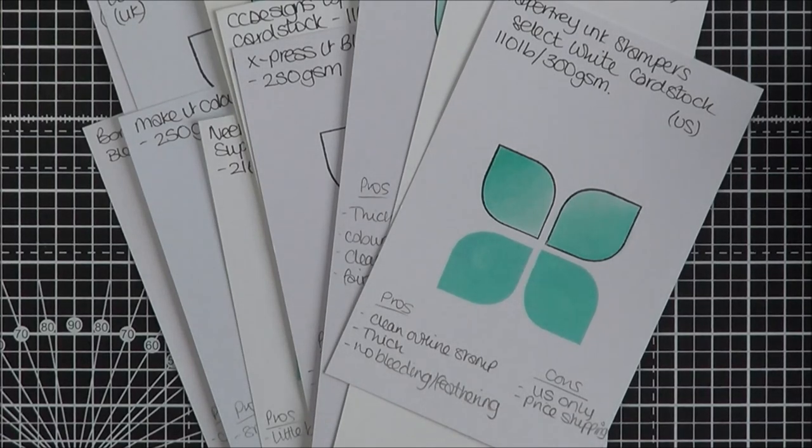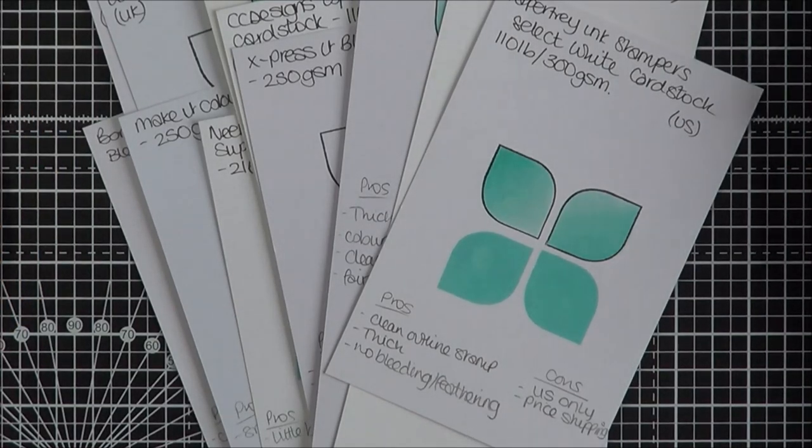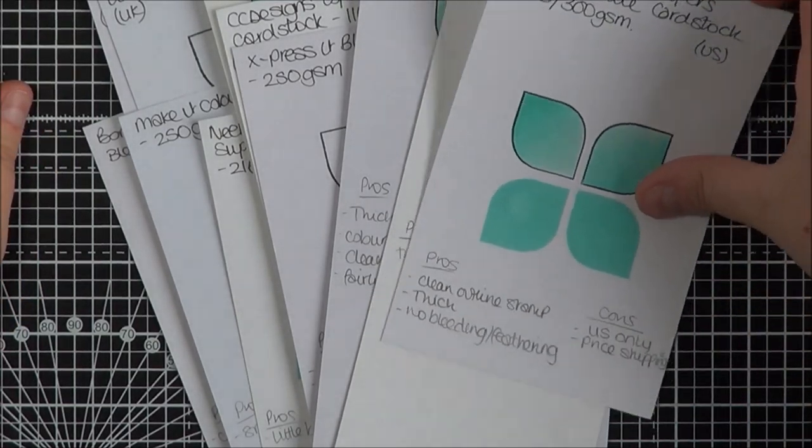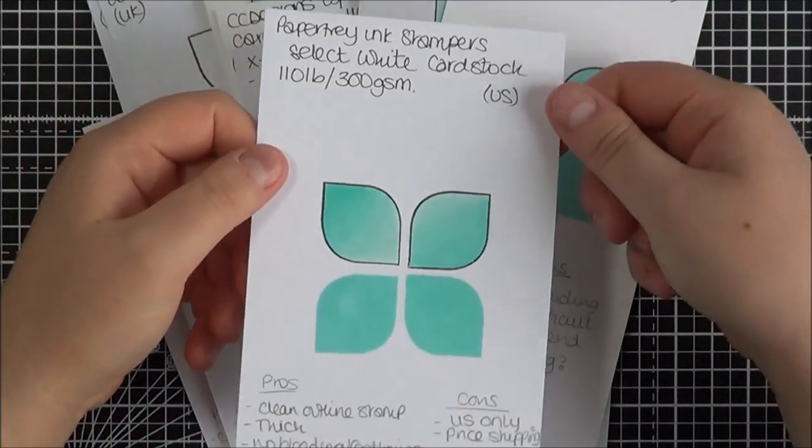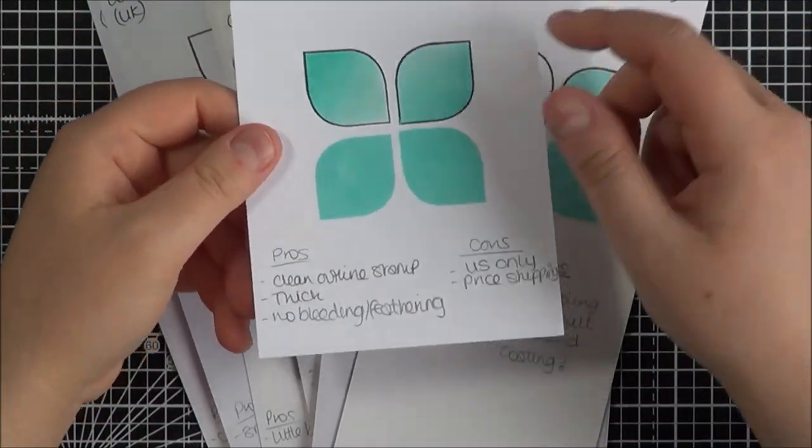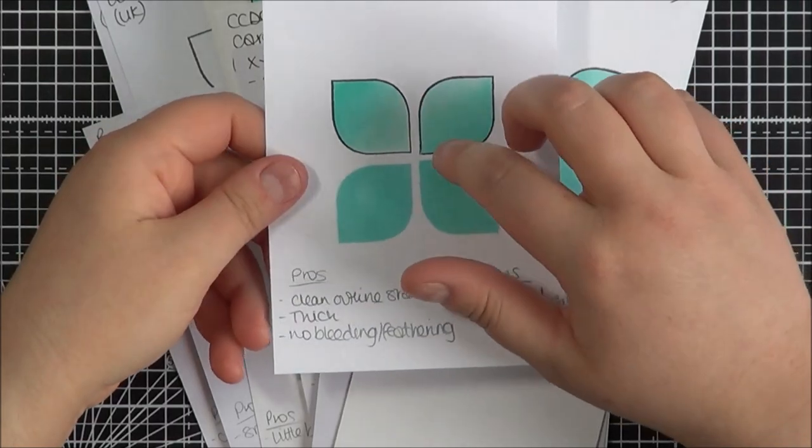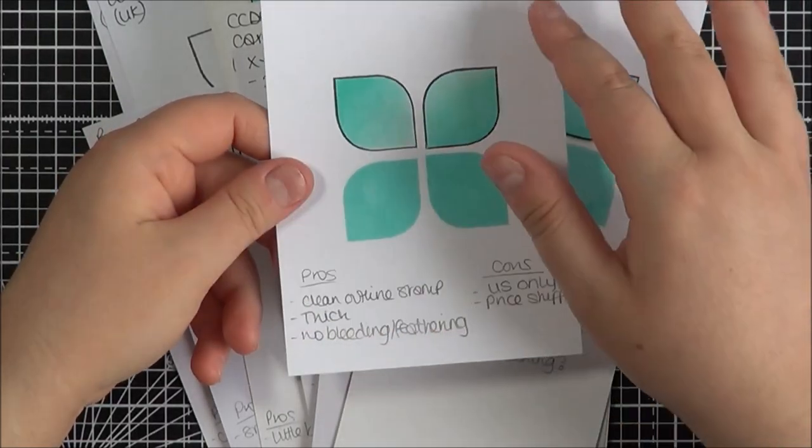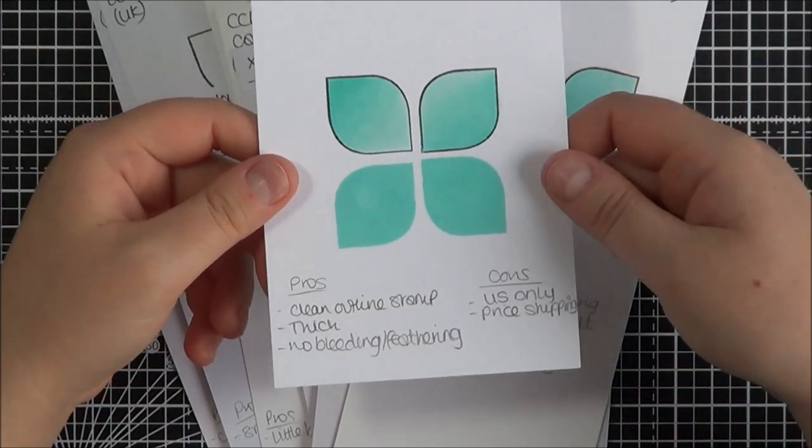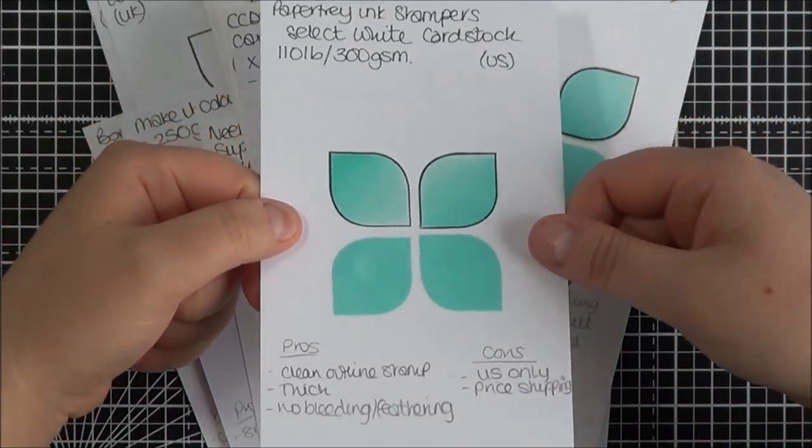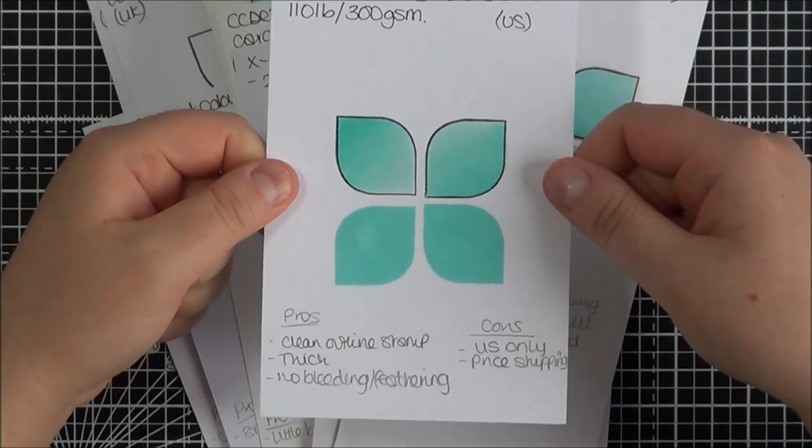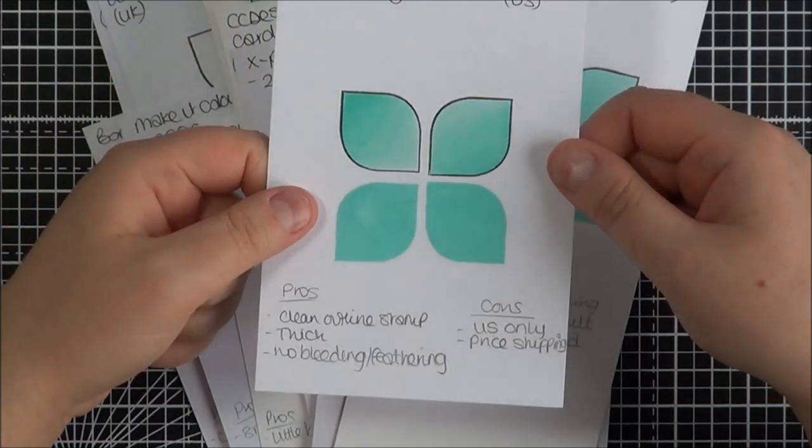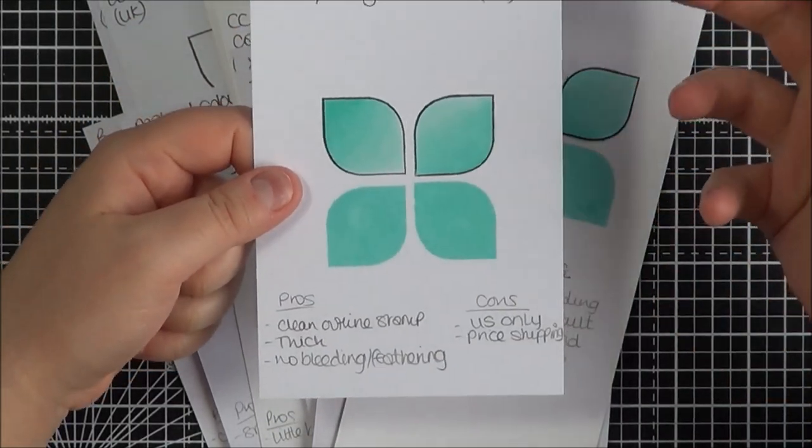Hello there and welcome to the Card Grotto. Today I've got a card comparison to share with you. Basically, I've been using Papertray Ink Stamper Select white cardstock for a good few years now. Papertray Ink put up their shipping costs internationally for cardstock, and because of this I wanted to try and see if I could find an alternative either in the UK or in the US that had better shipping.